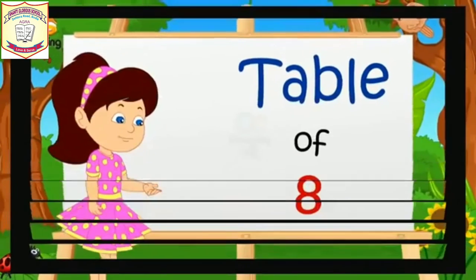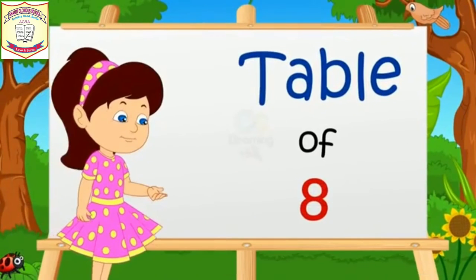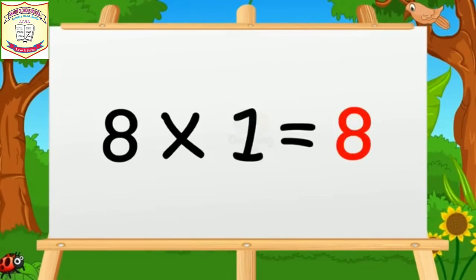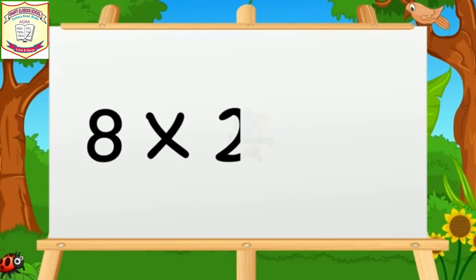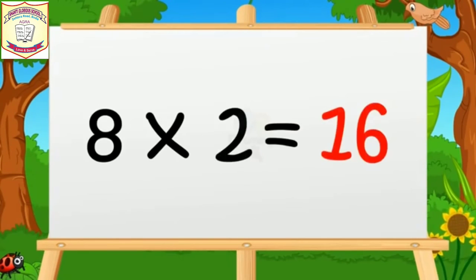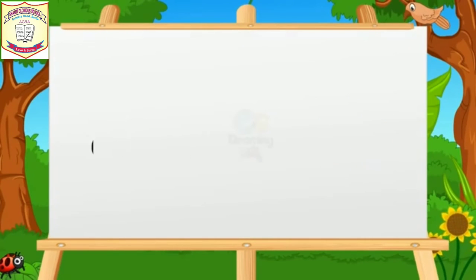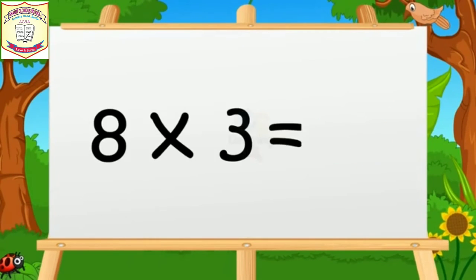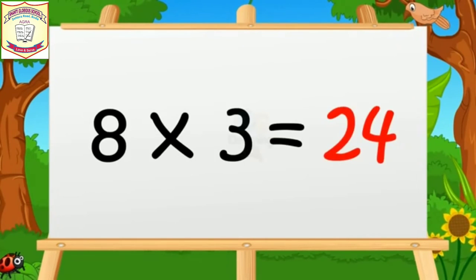Table of Eight. Eight ones are eight. Eight twos are sixteen. Eight threes are twenty-four.